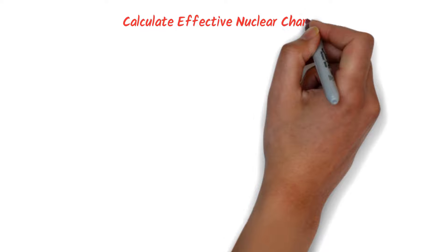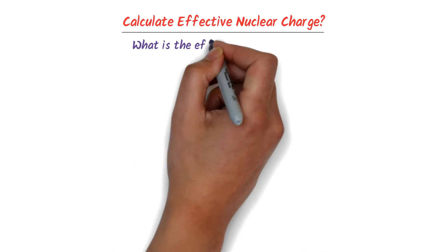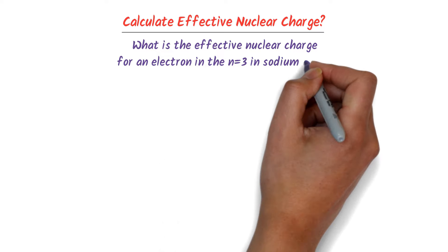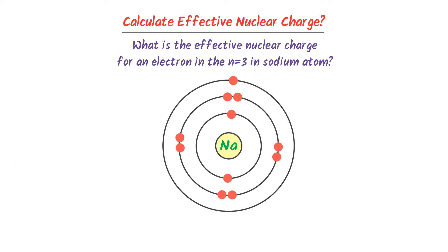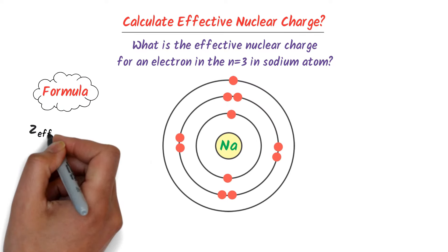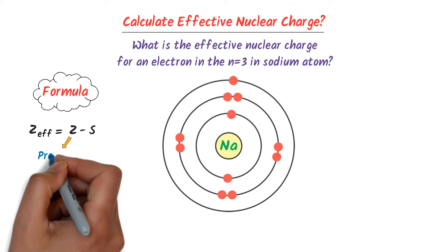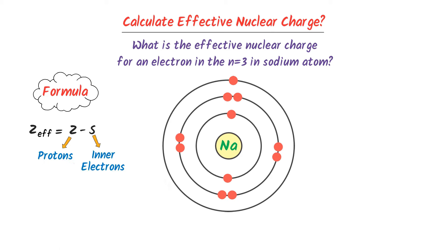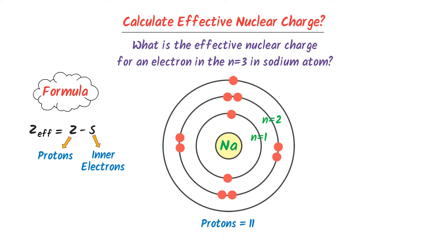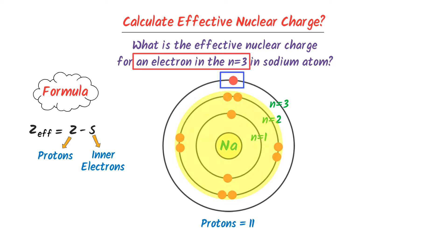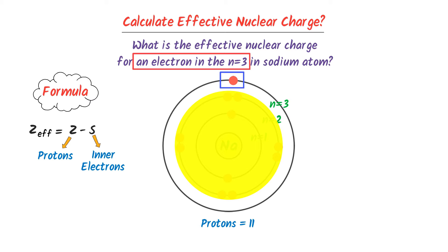How do we calculate effective nuclear charge? What is the effective nuclear charge for an electron in the n=3 shell in sodium atom? Effective nuclear charge equals Z minus S, where Z is the number of protons and S is the number of inner electrons. The atomic number of sodium is 11. This is the first shell, this is the second shell, and this is the third shell. According to the question, we have to find the effective nuclear charge for this electron.